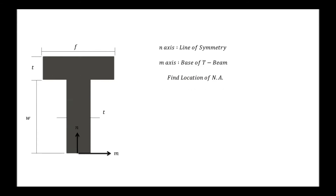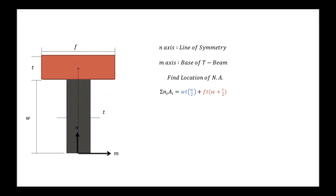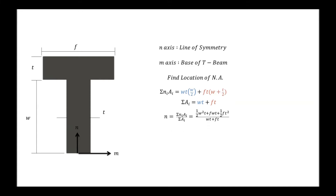We need to find the location of the neutral axis by finding the sum of NiAi terms — the sum of each area times its offset from the origin. The blue area has an area of WT and an offset of W over 2. The red area has an area of FT and an offset of W plus T over 2. The sum of areas is WT plus FT, so N-bar equals one-half W squared T plus FWT plus one-half FT squared, all over WT plus FT.